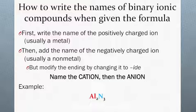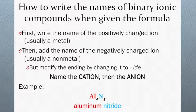By seeing the previous examples, you may have figured this out, but whenever you name a binary ionic compound, simply write the name of the positively charged ion, then write the name of the negatively charged ion, but change the suffix of the negatively charged ion to -ide. In other words, to write the name of a binary ionic compound, name the cation, then the anion.